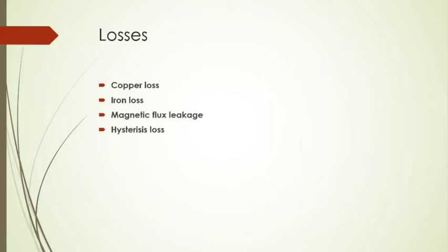The first one is copper loss. The primary and secondary coils consist of copper wires, and copper wire has some resistance. When current passes through the copper wires, heat is produced. This heat causes a small amount of energy loss, which is called copper loss. This may be minimized by using winding wires of very low resistance.